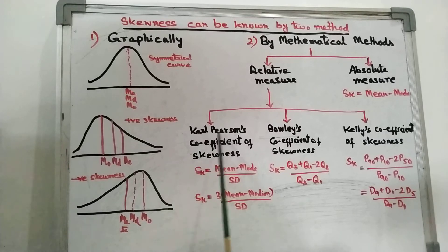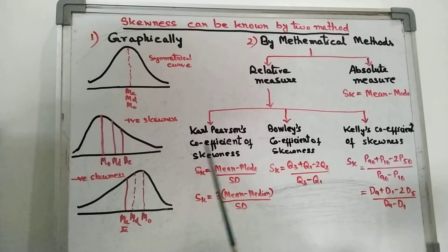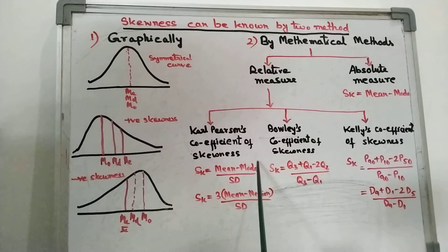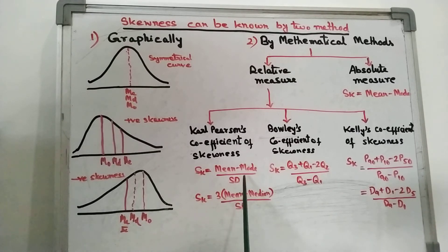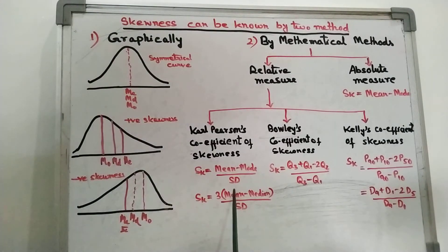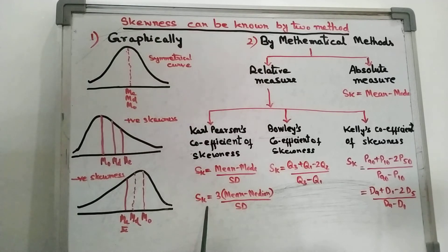Relative measures are given by three methods. The first one is by Karl Pearson, the second one is by Bowley, and the third one is by Kelly. Here, Karl Pearson's coefficient of skewness formula is: Sk = (mean − mode) / SD. We need to find the mean, mode, and standard deviation of the distribution — we have to use both measures of central tendency and measures of dispersion. Another formula given by Karl Pearson is: Sk = 3(mean − median) / SD. Here also, first find the mean, median, and standard deviation of the distribution and put it in the formula to get the skewness.